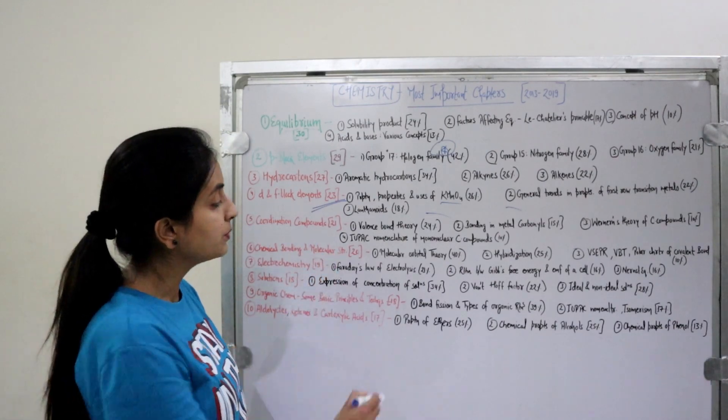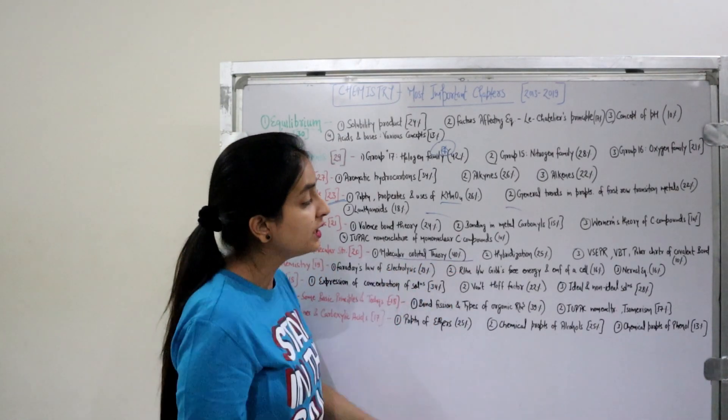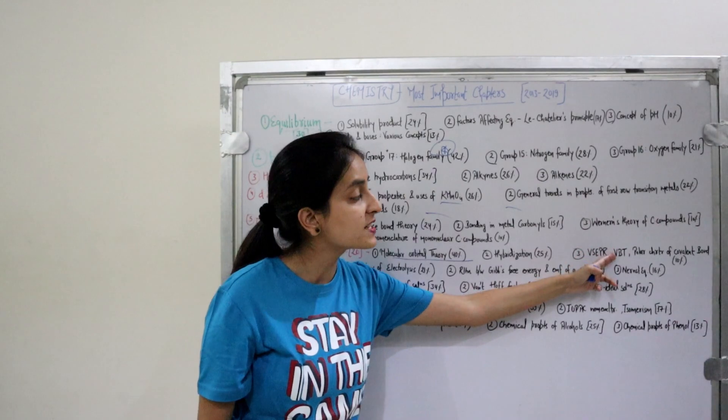Chemical Bonding and Molecular Structure: Molecular Orbital Theory (MOT), Hybridization, VSEPR Theory, Valence Bond Theory, and Polar Character of Covalent Bonds are the most important topics.